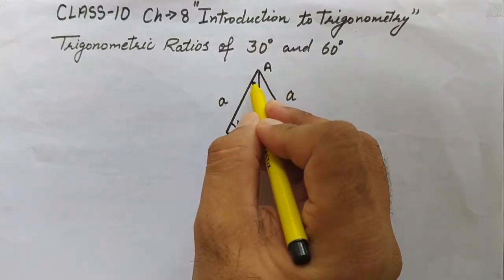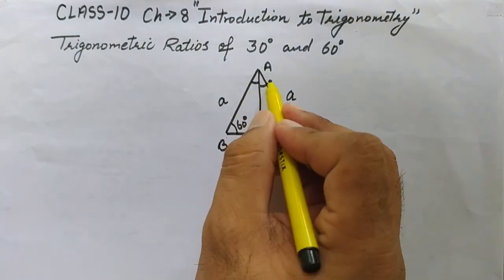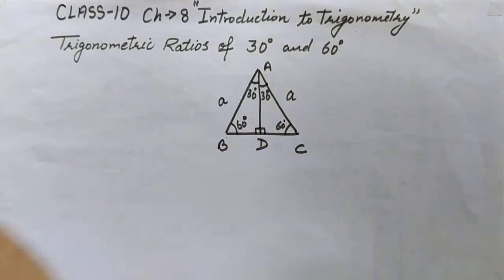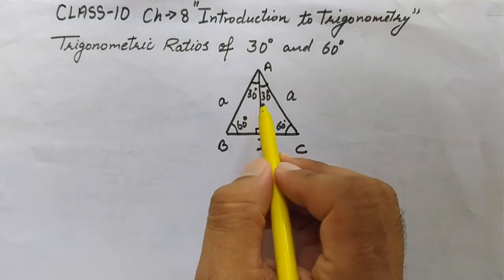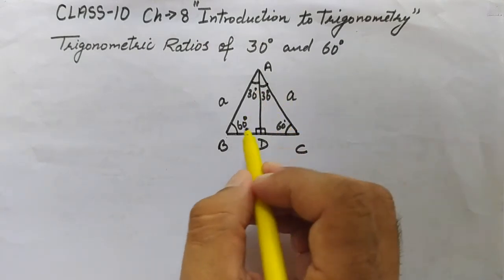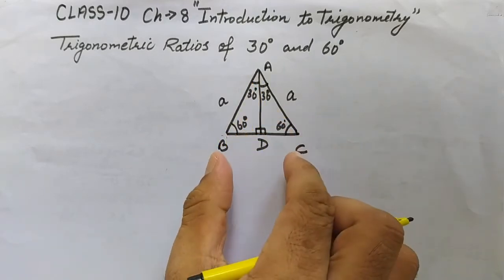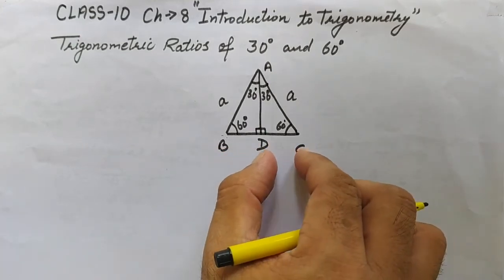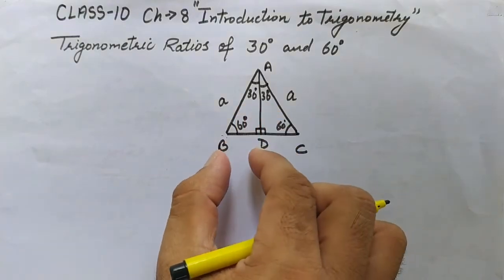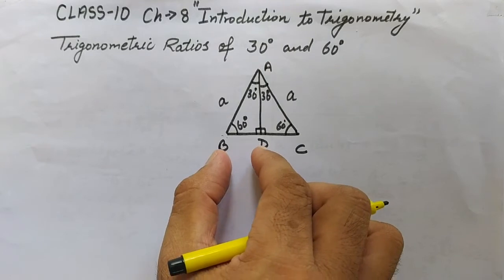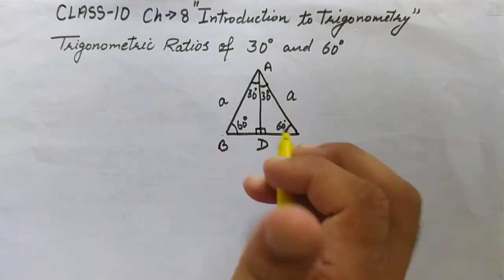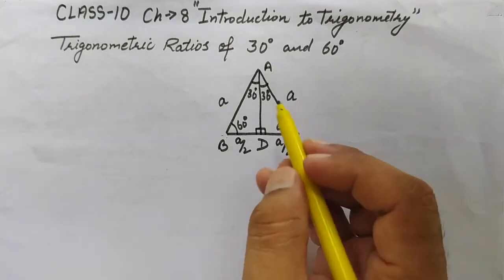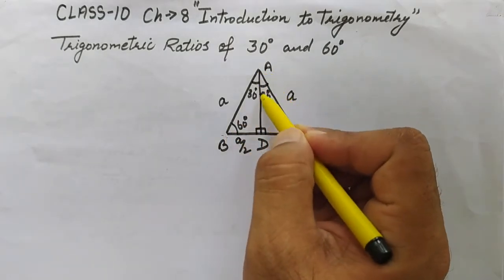By AAS, the two triangles are congruent. Hence, the two angles at A will also be equal by CPCT. Since the full angle at A is 60 degrees, each half is 30 degrees. Also by CPCT, BD equals CD. Since full BC is 'a' units, BD equals a/2 and CD equals a/2.